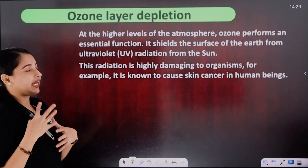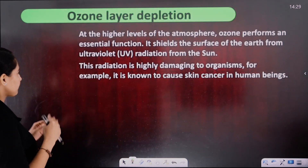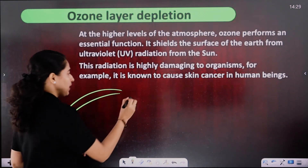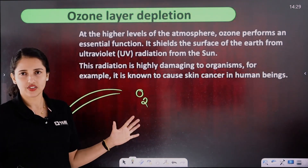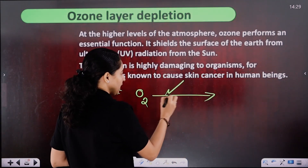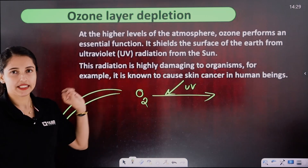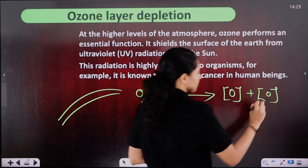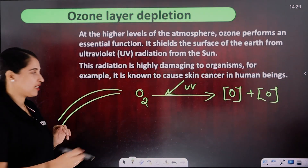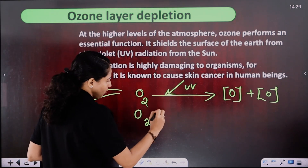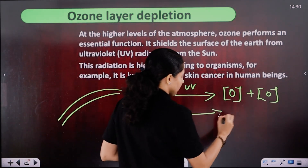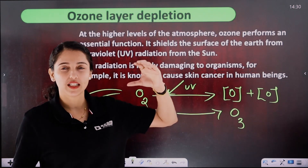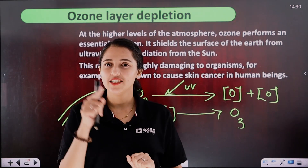How does the ozone molecule form in the stratosphere? In the stratosphere, we have oxygen molecules. These oxygen molecules are split by UV radiation, producing free oxygen atoms. These free oxygen atoms then join with other oxygen molecules to form O3 — ozone.